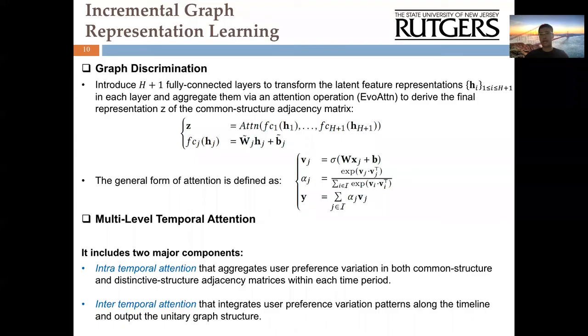Afterwards, we notice that the abstracted representations by each layer in the autoencoder usually contains information in different granularity. Therefore, we introduce H+1 fully connected layers to transform the latent feature representations in each layer and aggregate them via an attention operation, which is called evolved attention, to derive the final representations for the common structure of the adjacency matrix.